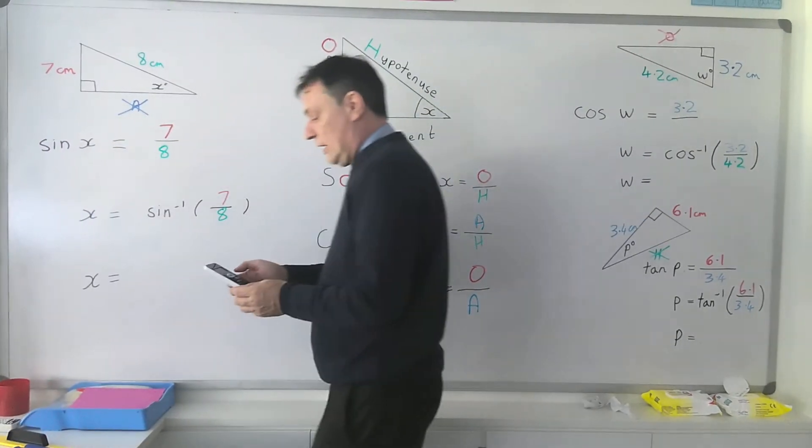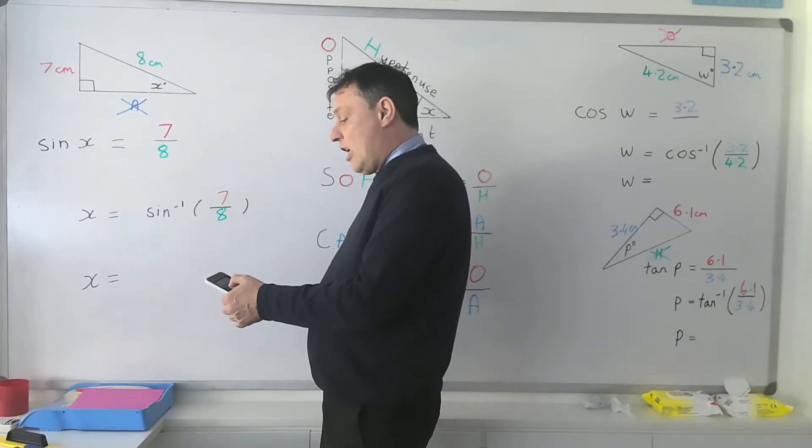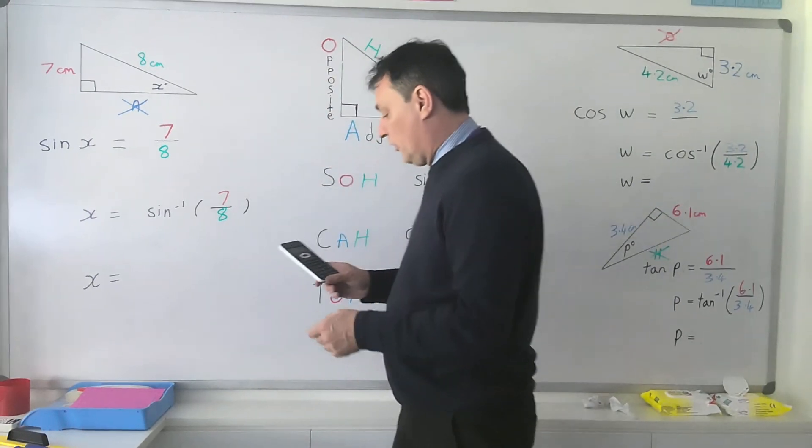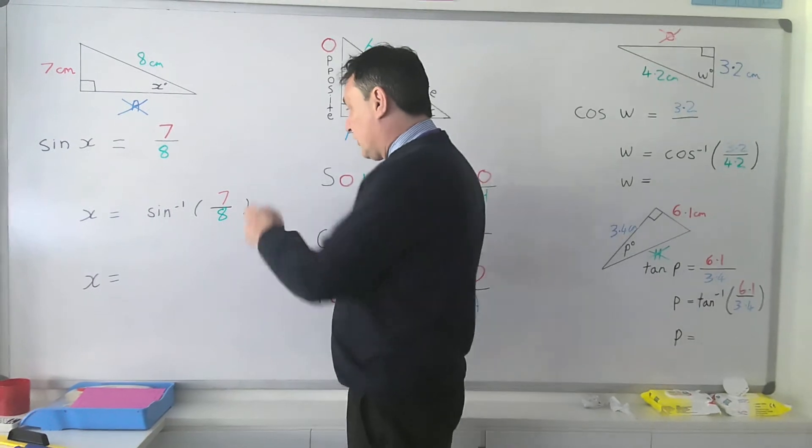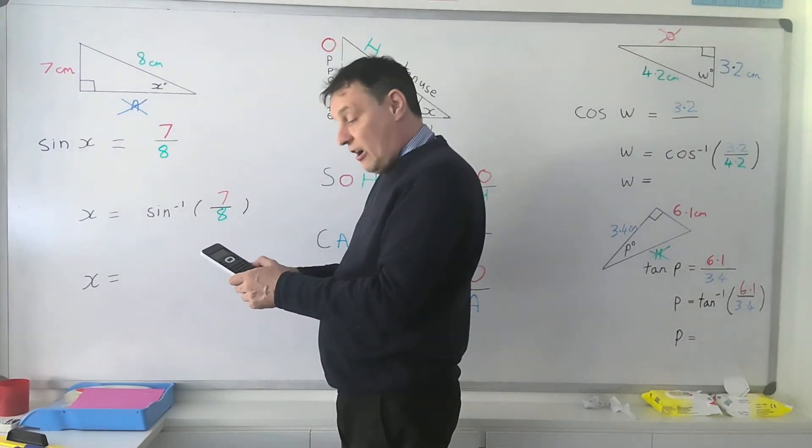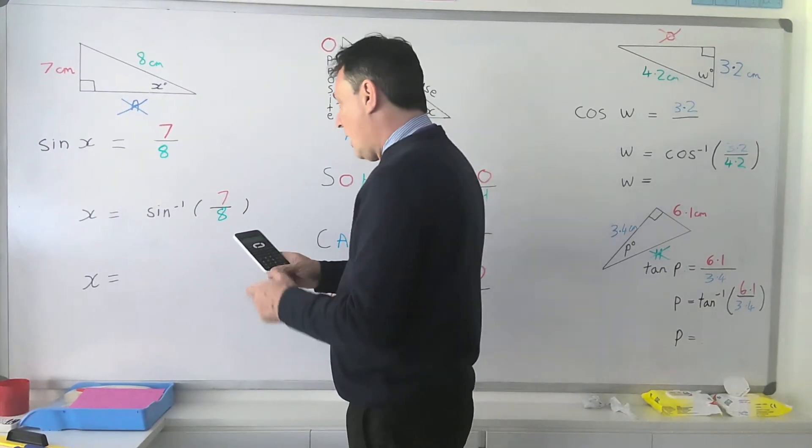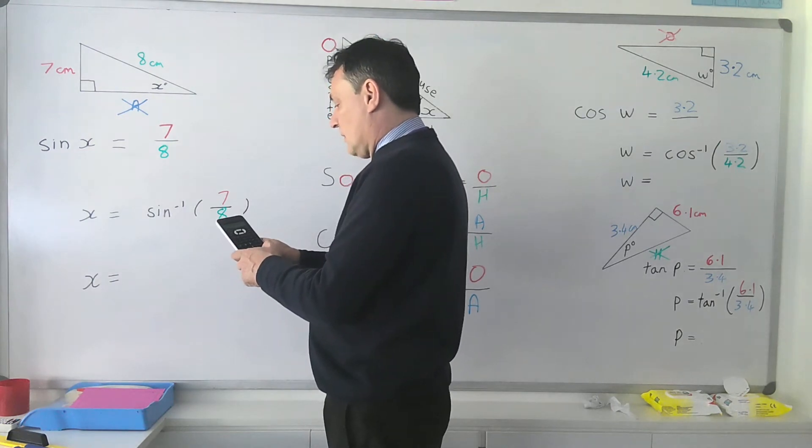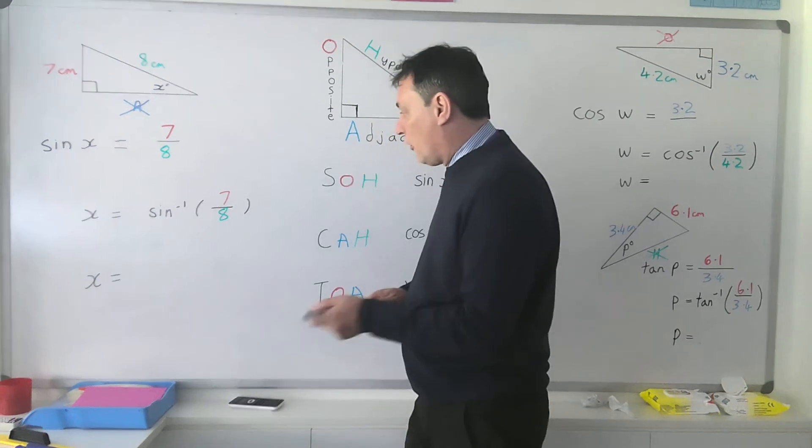The way we do that is you've got to do second function or shift on the calculator, then press the sine button and the sine to the minus 1 should come up on the screen. It might be an idea there to bracket that fraction, so it's an open bracket, 7 divided by 8 and then shut the bracket and then press equals.